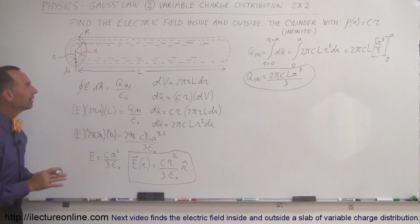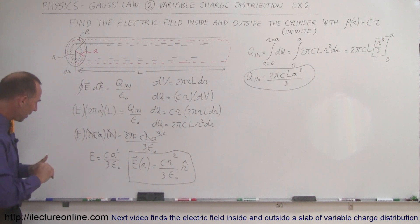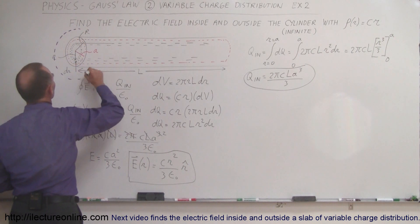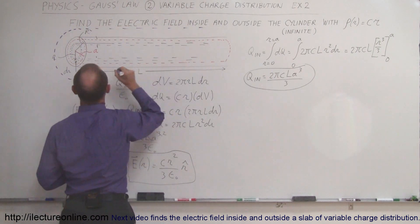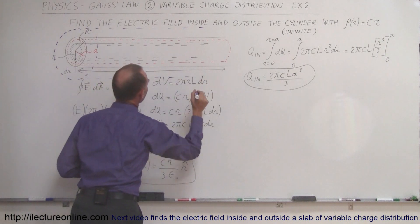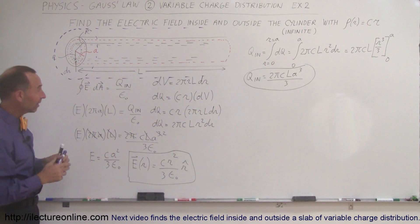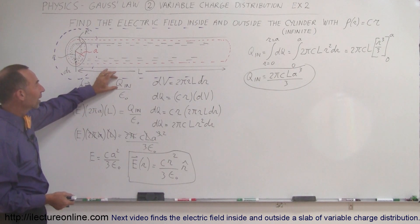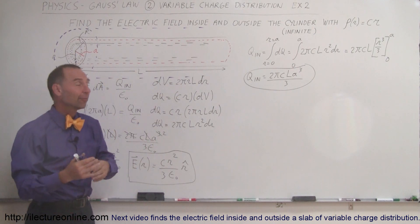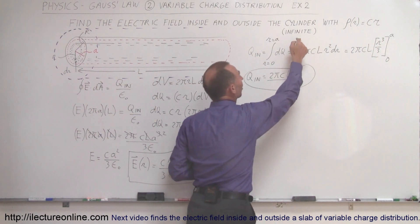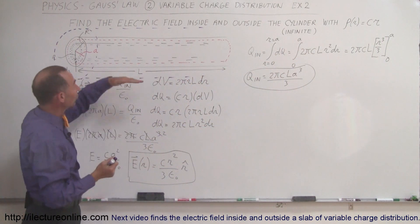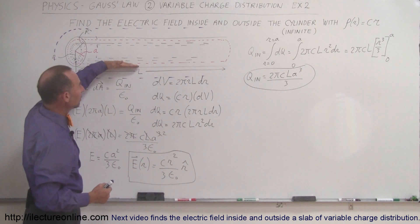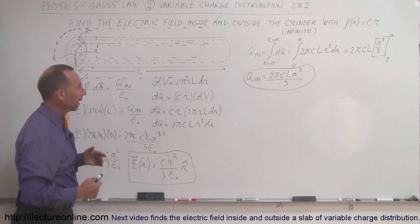Next we want to find the electric field outside the cylinder. For that we need a larger Gaussian surface extending all the way out beyond the cylinder. The equation will look exactly the same: E dot dA equals Q inside divided by epsilon sub nought. Now Q inside will use the same integral, except the limits go from 0 to the edge of the cylinder R — not to the Gaussian surface — because there's no charge in the region between the cylinder surface and the Gaussian surface.